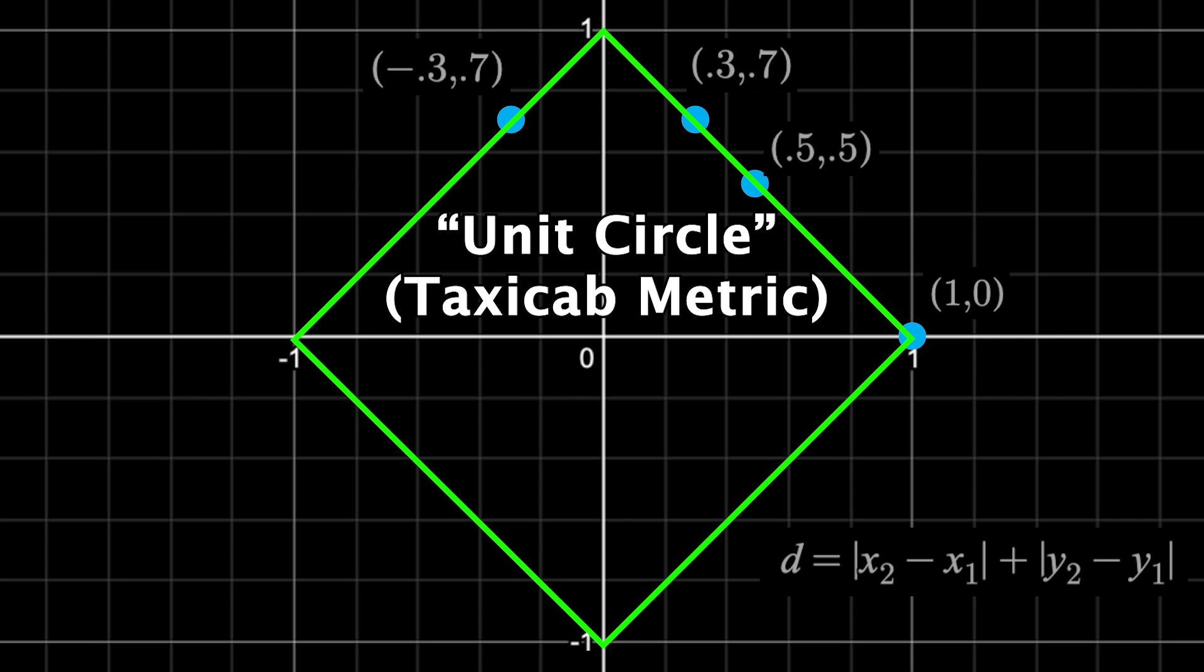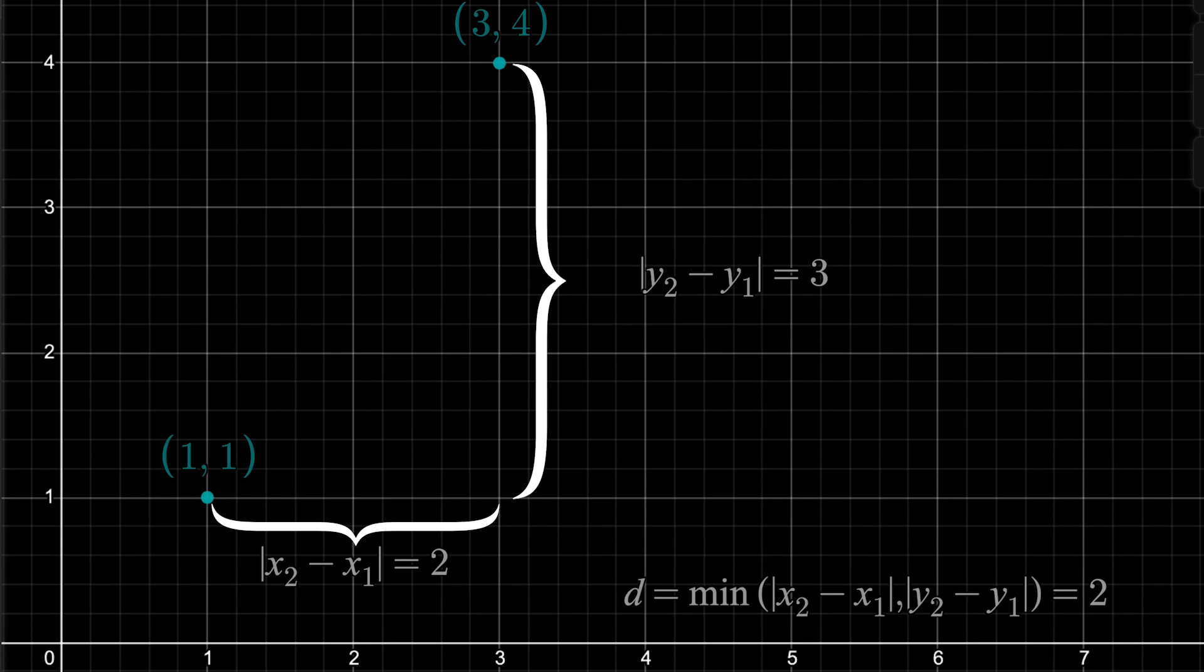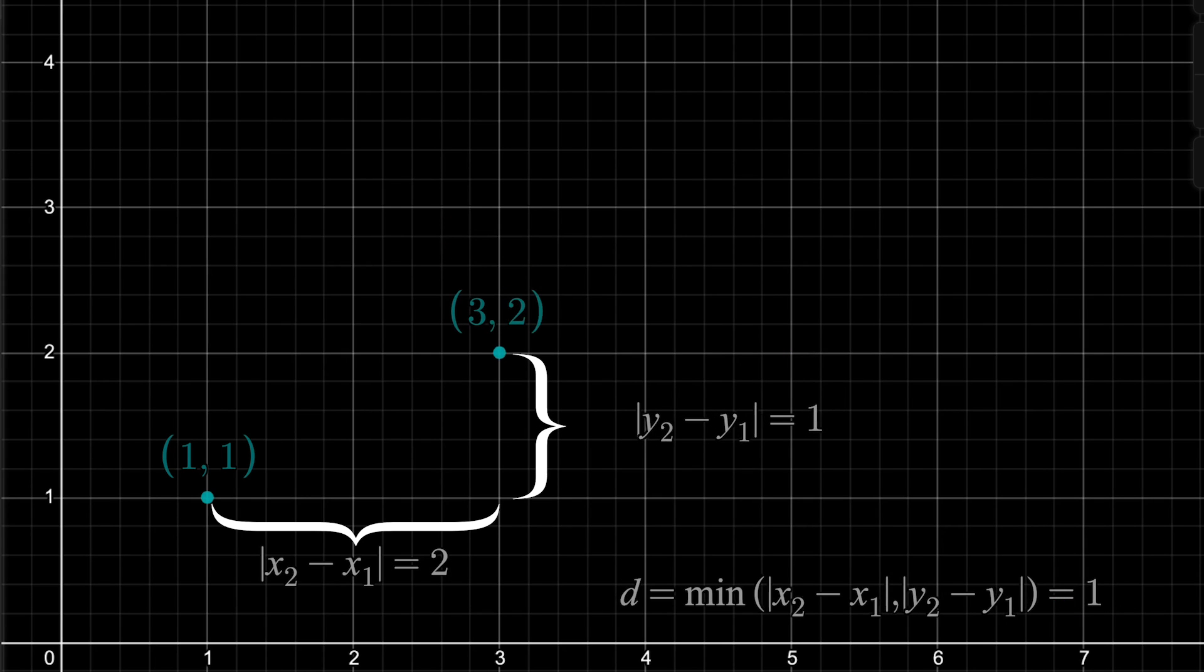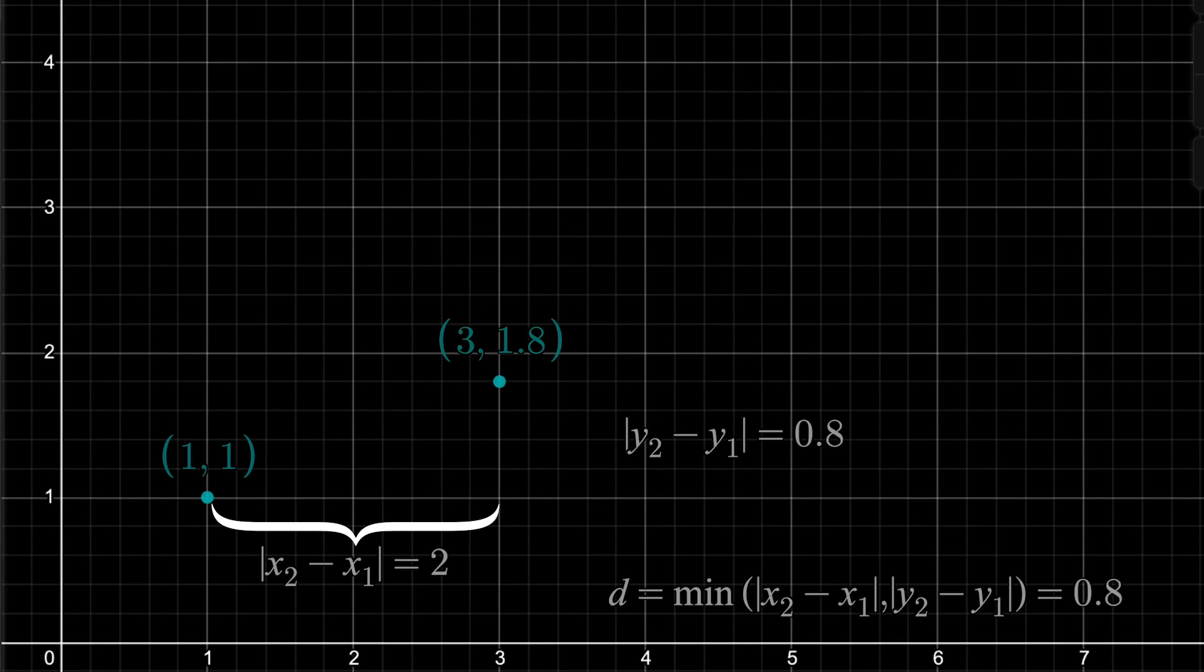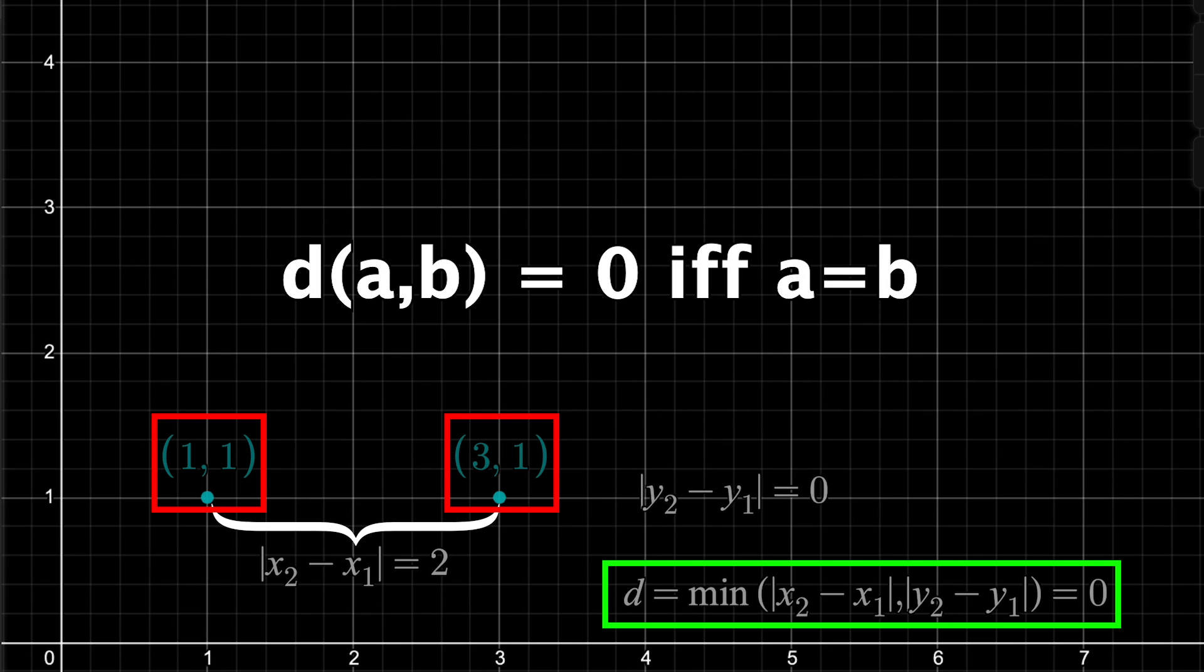Now would you say the following is a metric? Instead of defining distance as the sum of those positive differences in x and y values we just saw, distance will be the minimum of those two values. So like right now, the distance between these two points is 2. Because of those two coordinate differences, the smaller one is 2. If I move this coordinate down a little bit, the minimum is still 2. And therefore, so is the distance. Once the positive difference in y values drops below 2, then the distance matches that. So would this be a metric? Well, it actually is not, because when the two points have the same y value or x value, then the distance is 0, as in the distance between two different points can be 0. And that means the second requirement fails. So this is not a metric.